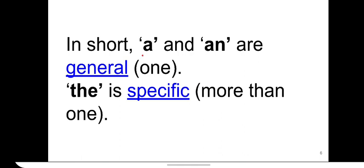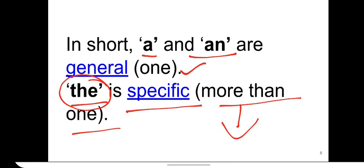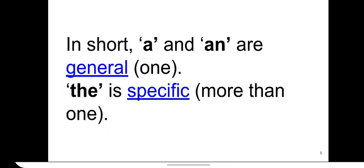So in short, a and an means general and it means one all the time. And the is used with specific and it can mean more than one. The is quite flexible. You can use it before anything. But then the means the reader and the listener know which noun you're referring to. And a or an does not mean we know about it. It simply means that you're talking about a noun generally.